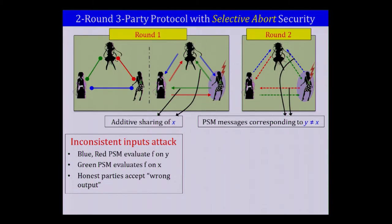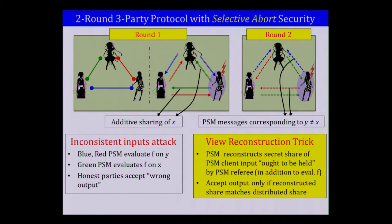To handle this, we propose a simple and elegant trick called the view reconstruction trick, exploiting the efficient extendability property of CNF secret sharing schemes. We ask the PSM not only to evaluate function F, but also to evaluate the secret share of the PSM client's input that ought to be held by the PSM referee. Given one share from the clients, you can compute what share the referee should hold. The referee accepts the output only if the reconstructed share matches the originally distributed share — so honest parties will not accept wrong output and will instead output abort, which is acceptable under selective abort security.